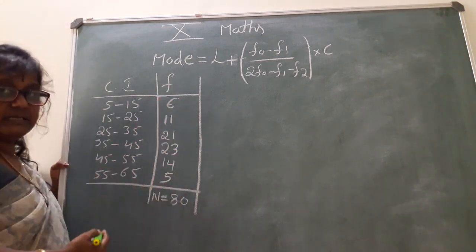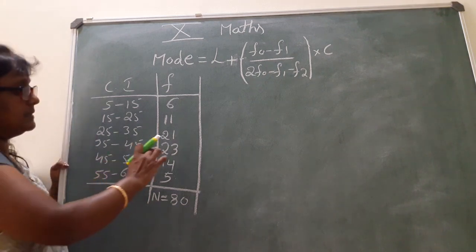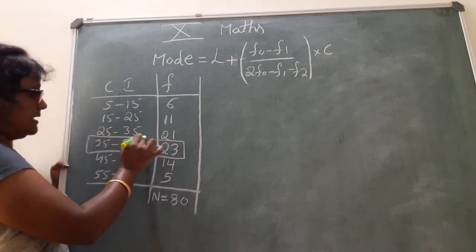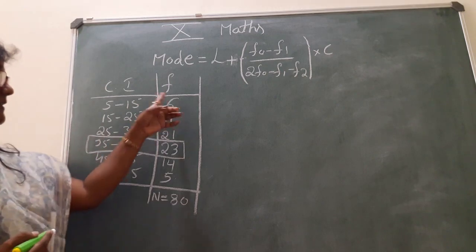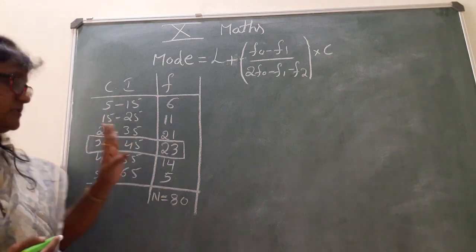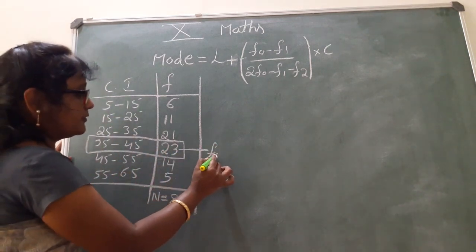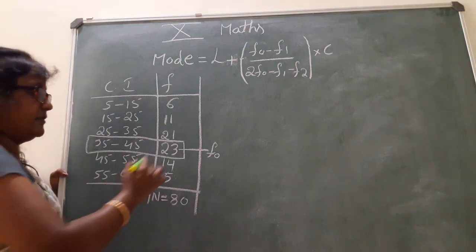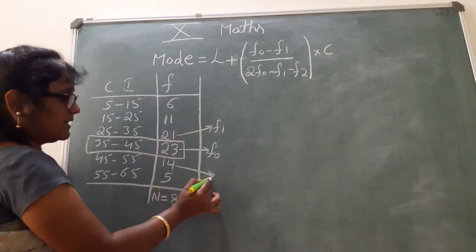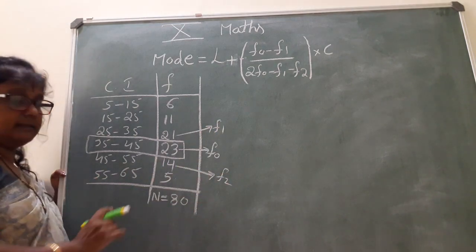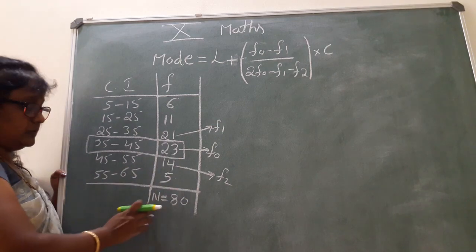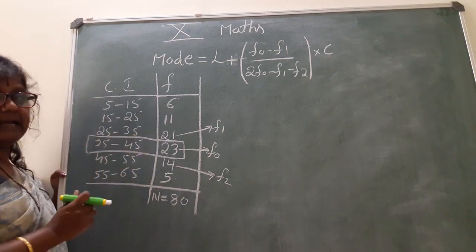From the frequencies, we should find the highest frequency. The highest frequency is 23. Compared to mean and median, mode is very easy — first we identify the highest frequency. 23 is the highest frequency, and that is always F0. Above that value is always F1, and below that value is always F2.